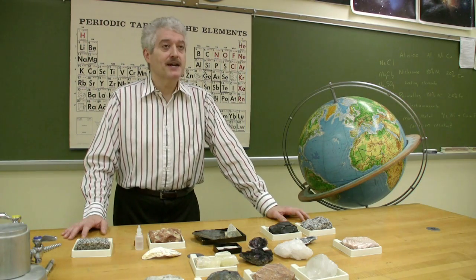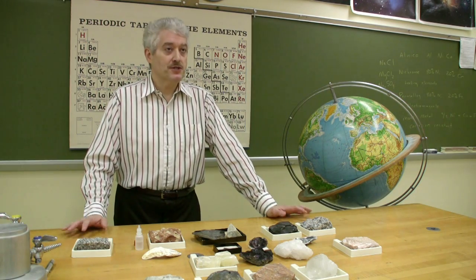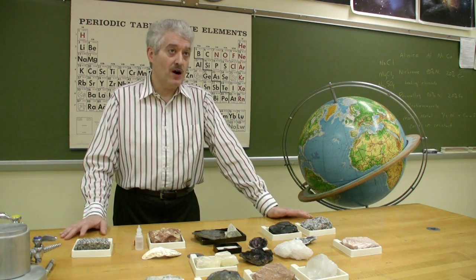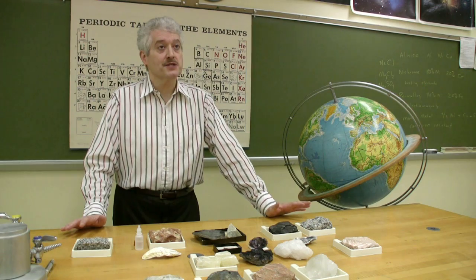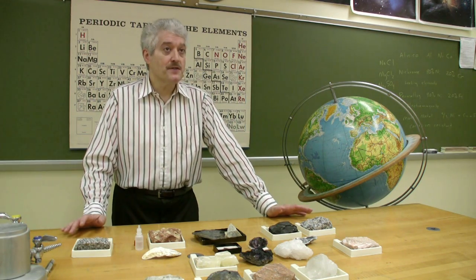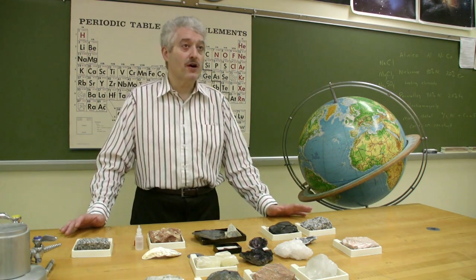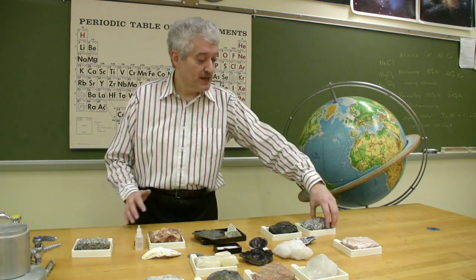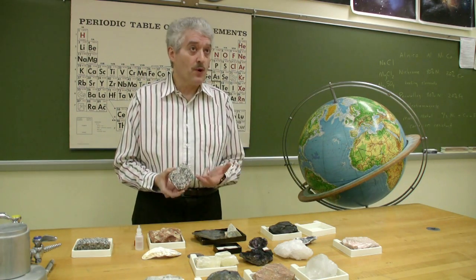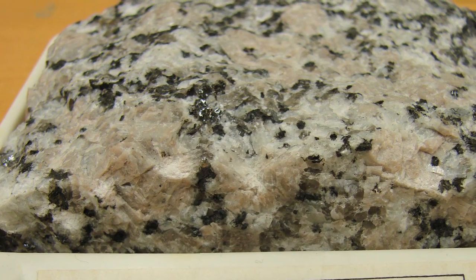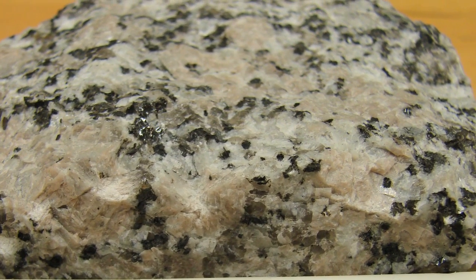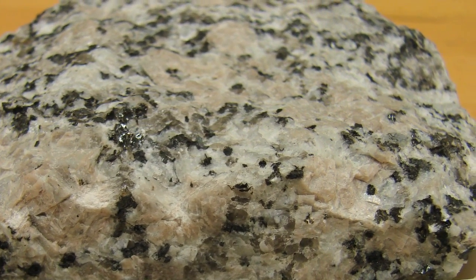The essential things for anybody interested in geology to learn is the three types of rocks: igneous, sedimentary, and metamorphic. Basically, the definitions are as follows. An igneous rock is one that was formed from molten rock called either magma or lava that cools and solidifies.